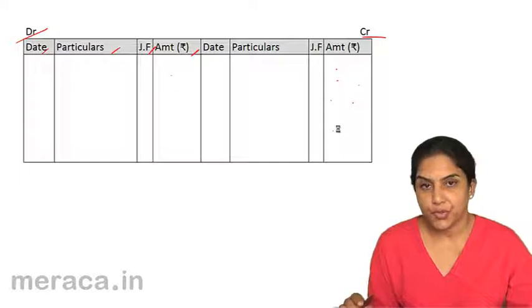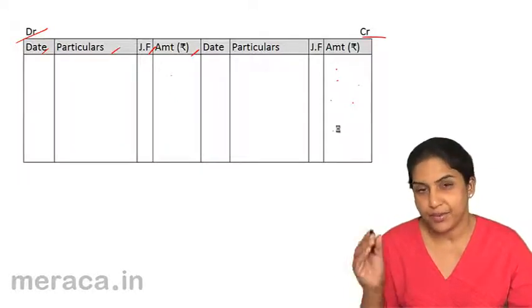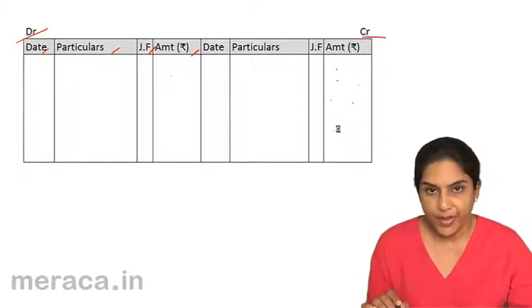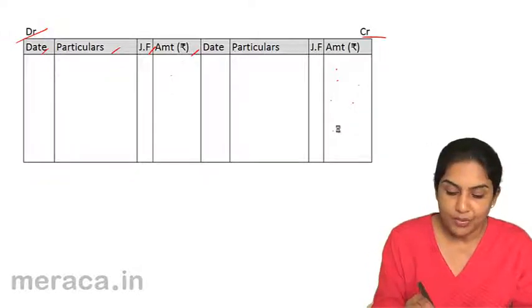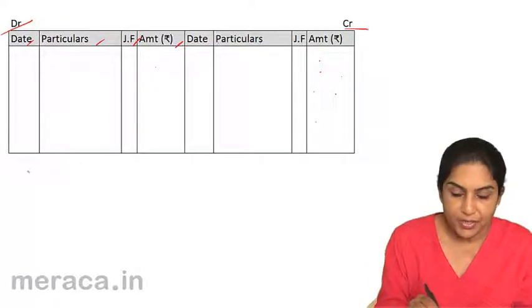If suppose I take the bad debts account, bad debt transaction, where we sold goods to Ahmad. We sold goods to Ahmad for 10,000.